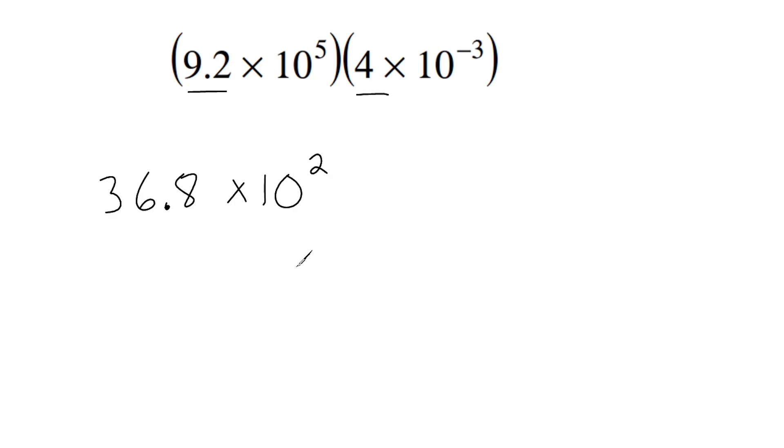Now, this is not our final answer though, because if you take a look at 36.8, we have two digits in front of the decimal. And to express in scientific notation, we are only allowed to have one digit in front of that decimal. So here is what we are going to do. All we're going to do is we are going to move this decimal to where it belongs, which would be one space to the left. So now we just have a single digit in front of that decimal.